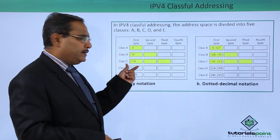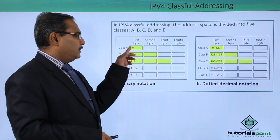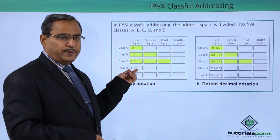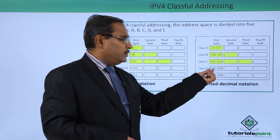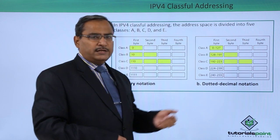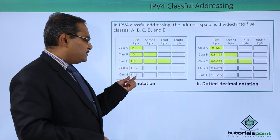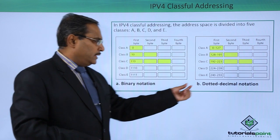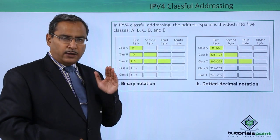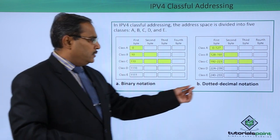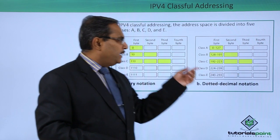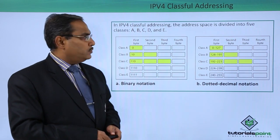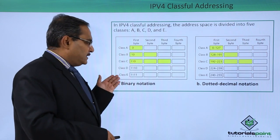If you cannot remember all these ranges, you can easily regenerate them in your exam by remembering just the prefix bits: 0, 10, and 110. Class D has the first 4 bits as 1110, ranging from 224 to 239. Class E has the first 4 bits as 1111: the base value is 128+64+32+16 = 240, and with 4 flexible bits ranging 0 to 15, it goes up to 255. This is the binary notation and the dotted decimal (dotted quad) notation for all classifications.